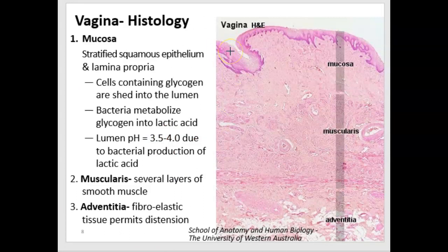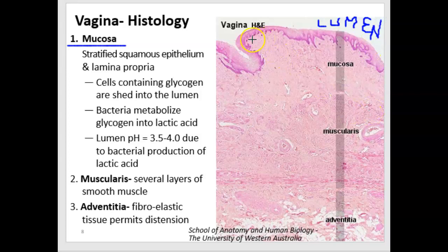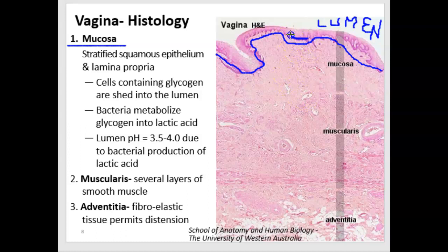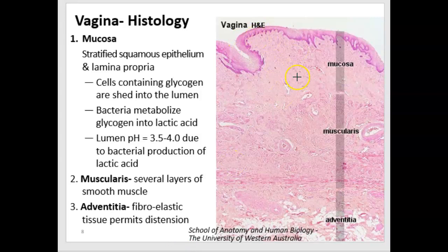Now let's look at the histology of the vagina. There are layers of tissue, just like in the digestive tract. The mucosa is the innermost lining, with the lumen at the top. The mucosa is made up of stratified squamous epithelium, which is important because stratified epithelium is found in areas with a lot of friction — you can lose some cells and still have protection, and cells in a deeper layer undergo mitosis to replace any cells sloughed off during intercourse or menstruation.